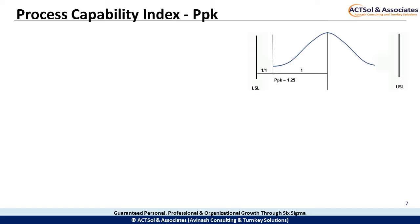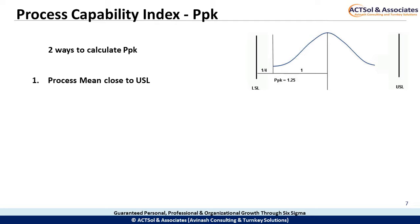Calculating PPK: there are two ways to calculate PPK depending on how your process is aligning. If your process mean, that is the central tendency, is closer to the USL, use the formula: PPK equals USL minus X-bar divided by 3s, where X-bar is the process mean.